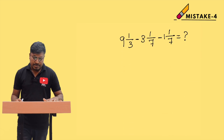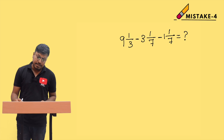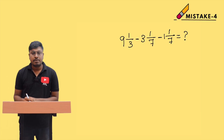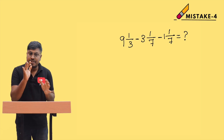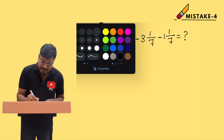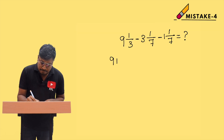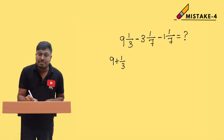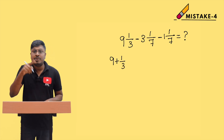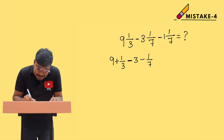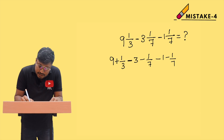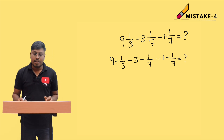Here is another example question: 9 and 1/3 minus 3 and 1/7 minus 1 and 1/7 equals question mark. To separate these mixed fractions correctly: the first term is 9 plus 1/3. For minus 3 and 1/7, the minus is common for both parts, so write minus 3 minus 1/7. Similarly, minus 1 and 1/7 becomes minus 1 minus 1/7.